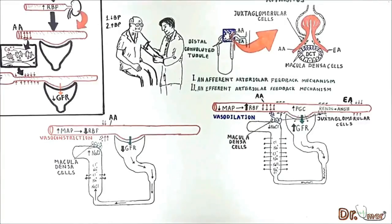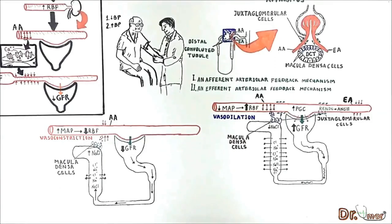To sum it up, it is very important to note that the macula densa cells respond to the concentration of sodium chloride rather than to renal blood flow itself.